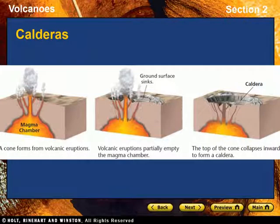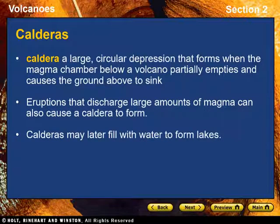Calderas. When the magma chamber below a volcano empties, the volcanic cone may collapse and leave a large, basin-shaped depression called a caldera. The process of caldera formation is shown on screen. Eruptions that discharge large amounts of magma can also cause a caldera to form. Krakatau, a volcanic island in Indonesia, is an example: when the volcanic cone exploded in 1883, a caldera with a diameter of six kilometers formed. Calderas may later fill with water to form lakes. Thousands of years ago, the cone of Mount Mazama in Oregon collapsed to form a caldera, which eventually filled with water and is now called Crater Lake.